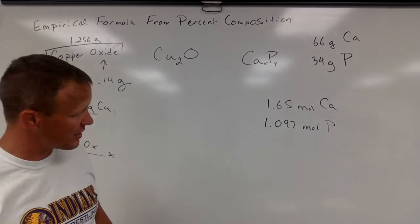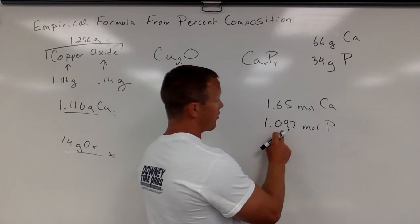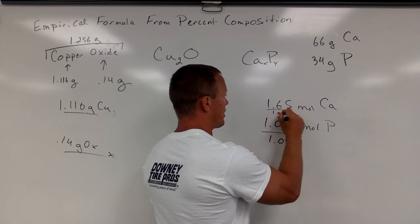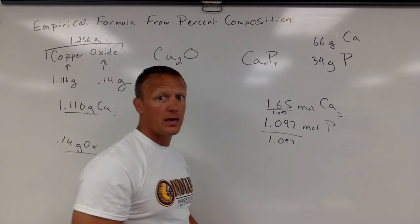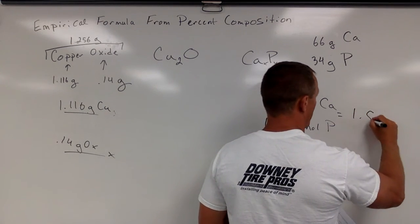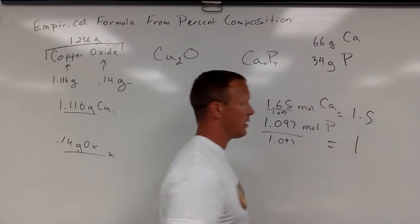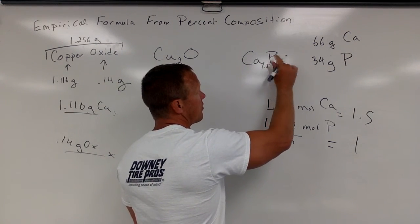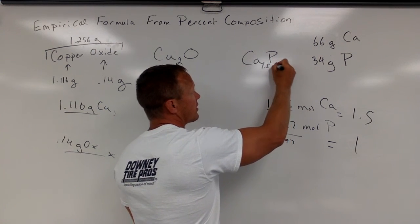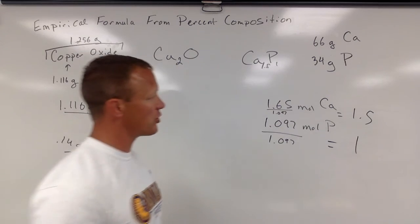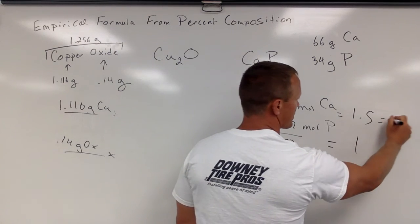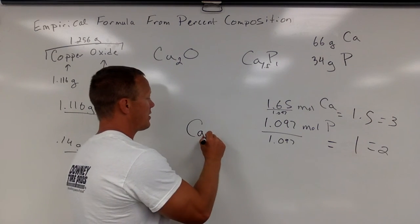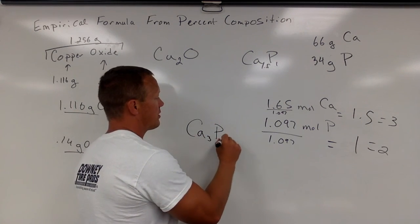Well, to get the ratio, that's going to be kind of a tough ratio, divide them by the smaller one. I'm going to divide both these by 1.097, divide by 1.097. When I do that, I get about 1.5 and 1. Well, I obviously can't write Ca 1.5 phosphorus 1. So you have to know that a 1.5 to 1 ratio, if I double that and double that, that becomes 3, that becomes 2. So it's a 3 to 2 ratio. So it's Ca3P2.